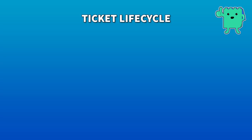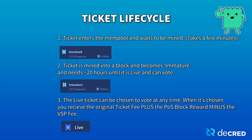Now let's take a look at the different phases your newly purchased ticket will go through. First, your ticket enters the mempool — this is where your ticket waits to be mined by a proof of work miner. Once your ticket is mined into a block, it becomes immature. This state lasts for 256 blocks, or about 20 hours, during which time the ticket cannot vote. After your ticket matures, it enters the ticket pool and becomes live, or unspent, which means it is eligible for voting and can be chosen at any time.